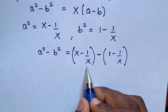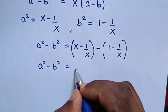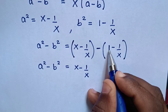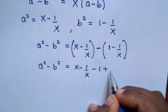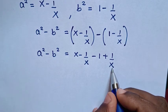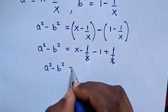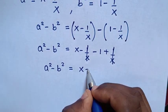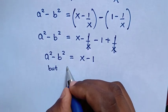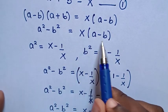So a squared minus b squared equals (x minus 1 over x) minus (1 minus 1 over x). Opening the brackets: x minus 1 over x minus 1 plus 1 over x. The negative 1 over x and positive 1 over x cancel, giving a squared minus b squared equals x minus 1.